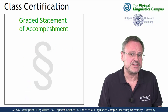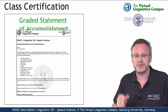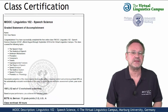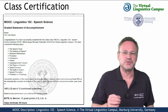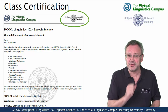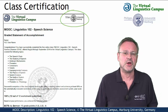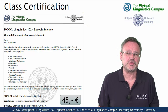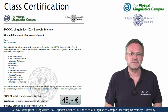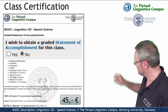The most advanced option is the graded statement of accomplishment, which includes your precise grade, the workload in hours, and a complete list of all the tasks you successfully submitted. This certificate is issued by Marburg University in conjunction with the Virtual Linguistics Campus and involves a fee of currently 45 euros. To obtain such a certificate, you have to make your choice on the class start site using this option.